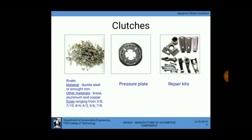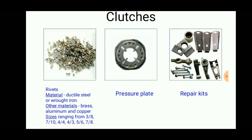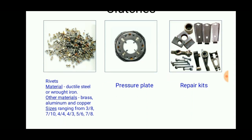The pressure plate is an important component in the clutch system. Materials used include ductile steel, brass, aluminum, and copper. In the pressure plate, cast iron is the primary material because it must withstand high temperatures.